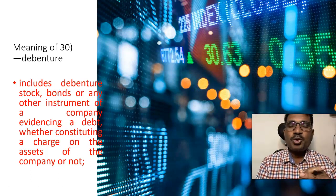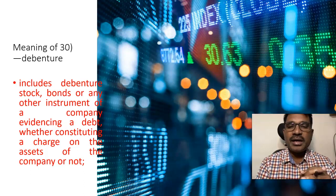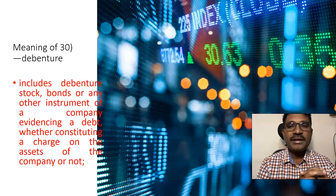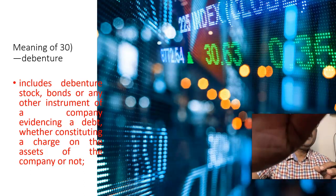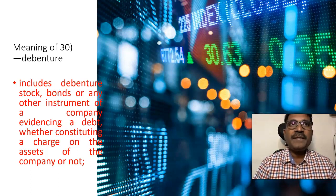As per Section 2(30) of the Companies Act, a debenture includes stock, bonds, or any other instruments of a company evidencing a debt, whether constituting a charge on the assets of the company or not. In simple terminology, debenture capital is a document that acknowledges the debt and acknowledges the capital through debt instruments — meaning the company borrows money and issues the capital.